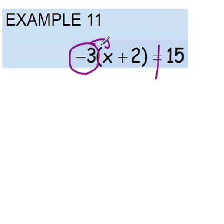So it is a distribution problem and we're going to take this negative 3 and multiply it times everything in the parentheses.